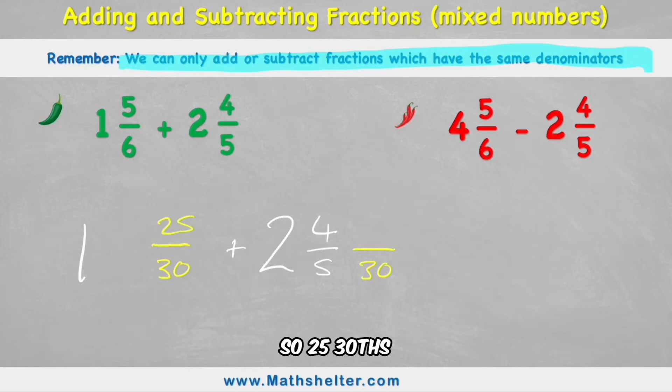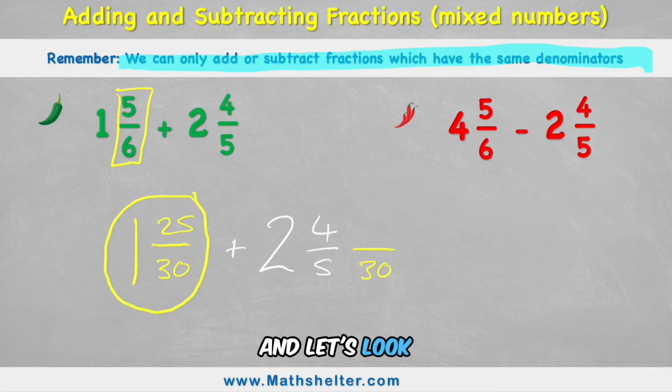And 5 times 5 is 25. So 25 thirtieths is equivalent to 5 sixths. So my new fraction on this side is 1 and 25 thirtieths. And let's look at the other side.